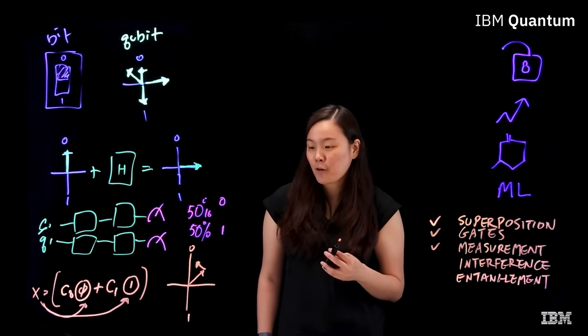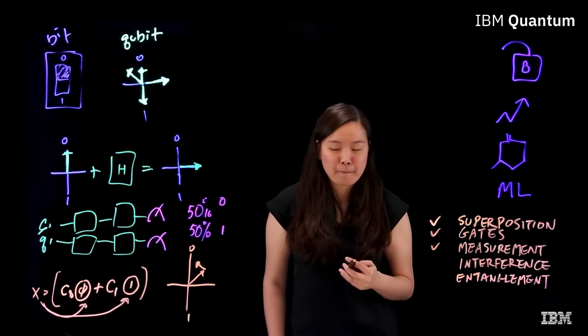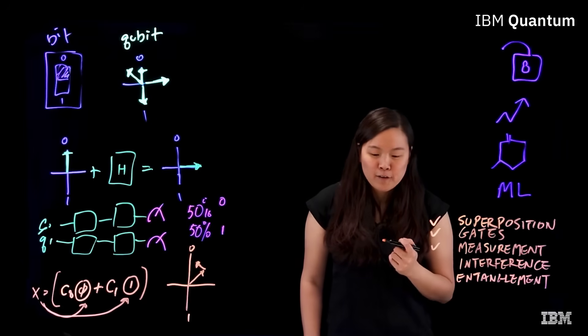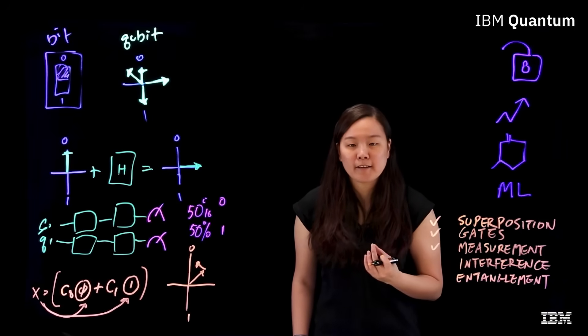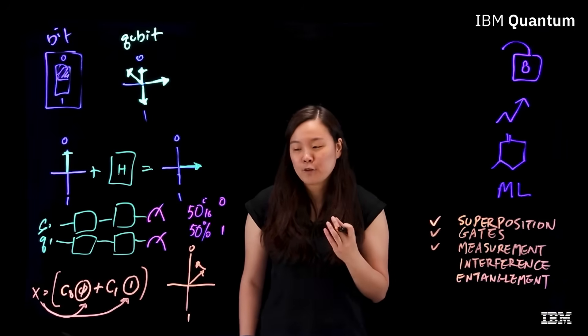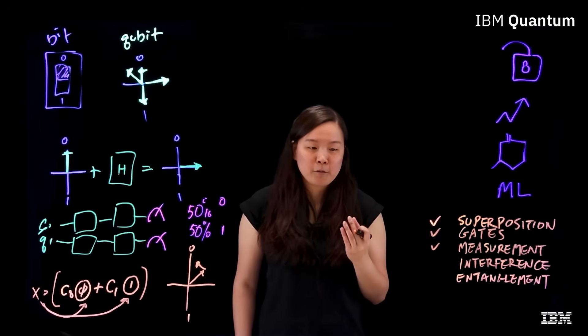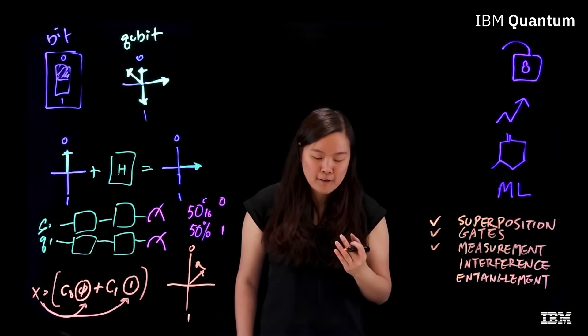Now this leads us to our last topic, entanglement. When qubits are entangled, their states become strongly correlated. That is, changing the state of just one qubit will change the state of another.